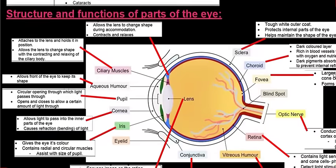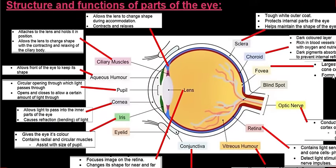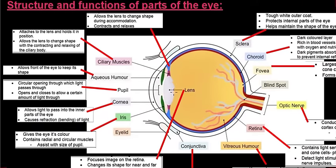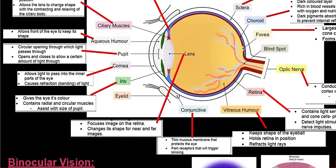Moving on to the structure and functions of parts of the eye. Looking at this diagram at first it might seem a little overwhelming, but it really isn't. There are a lot of labels and functions, but as soon as you start peeling back the eye layer for layer you'll see it's not that bad. We'll work our way from outside inwards through the eye.